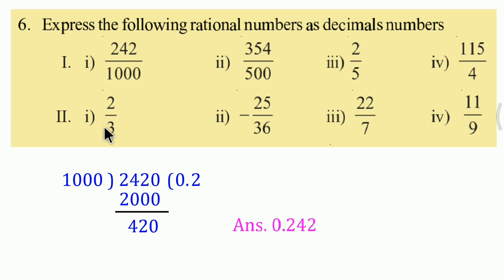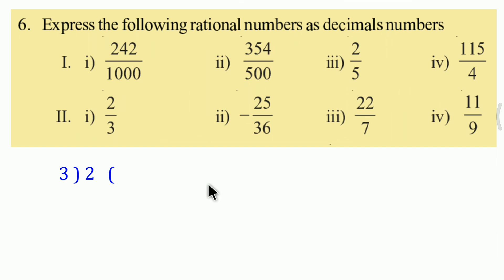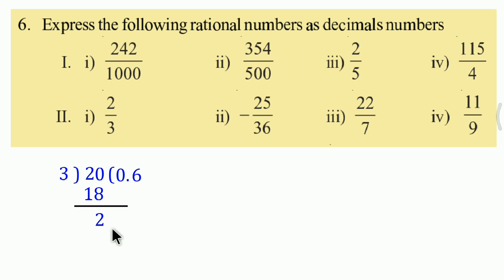Next, the second one: 2 upon 3. Let's work this out. Divide 2 by 3. Since 3 cannot divide 2, place a point and write 0, making it 20. 3 times 6 is 18; 20 minus 18 gives remainder 2. Again dividing 2 by 3, we keep getting remainder 2. This continues - 6 keeps repeating.